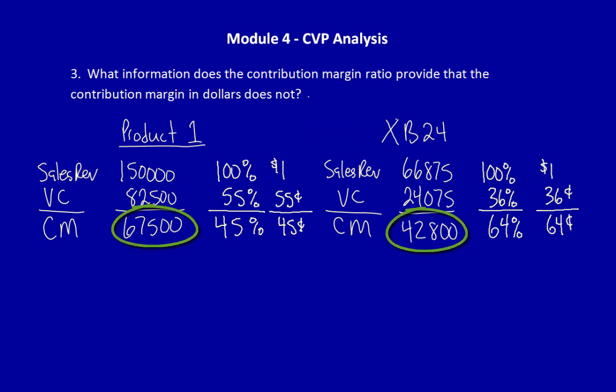We might choose to produce XB24 because it provides a bigger bang for every dollar we sell. A comparison of absolute dollars can lead you astray, so it's best to calculate both the absolute dollar value and the Contribution Margin Ratio. That way, you get a clearer picture to make an informed decision moving forward.